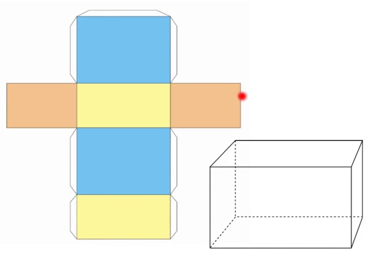And you guessed it, the orange ones are the sides of the rectangular prism. Let's take a look at another example.